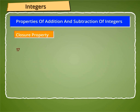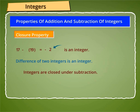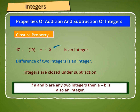Also, 17 minus 19 is equal to minus 2, and minus 2 is an integer. Thus, the difference of two integers is an integer. We say that integers are closed under subtraction. Hence, if A and B are any two integers, then A minus B is also an integer.